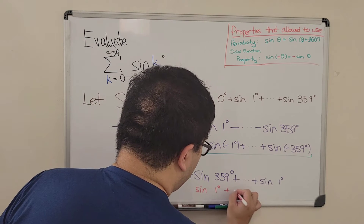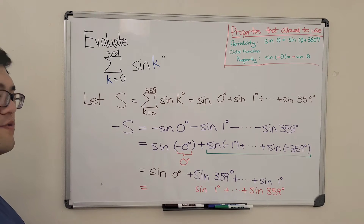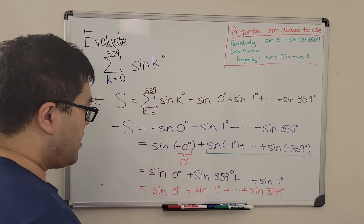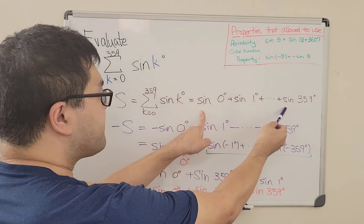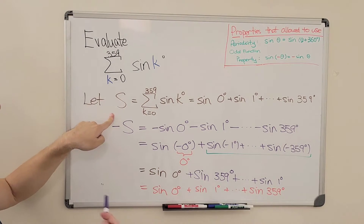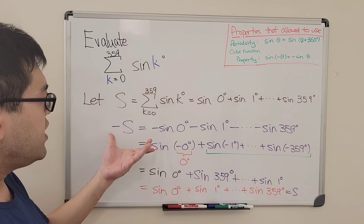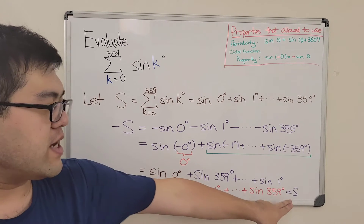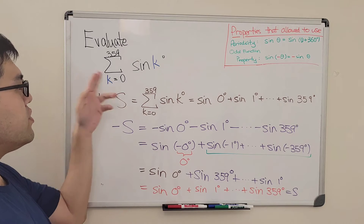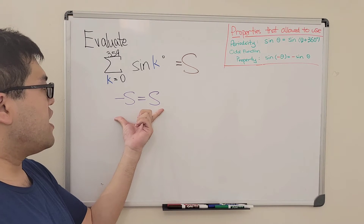Flipping the order of the terms from the second onward, we get sine of 1 degree plus sine of 2 degrees, all the way to sine of 359 degrees. Adding back the first term, sine of 0 degrees, we recognize this is exactly the original sum S. So we now have the relation: negative S equals S.